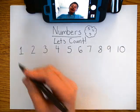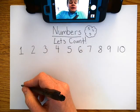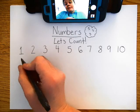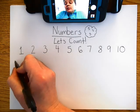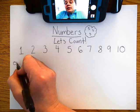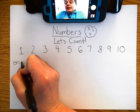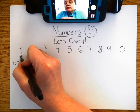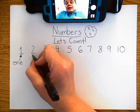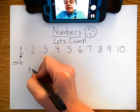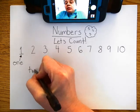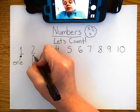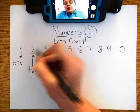And let's write the numbers, so you know how to write the numbers. Let's spell them. One, O, N, E, one. Let's write the number two. Two, T, W, O, two, two.